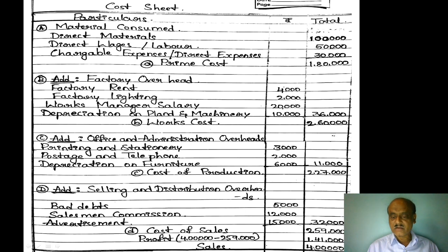Sales: 4,00,000. Less cost of sales: 2,59,000. The remaining amount is profit — the balancing figure — 1,41,000.